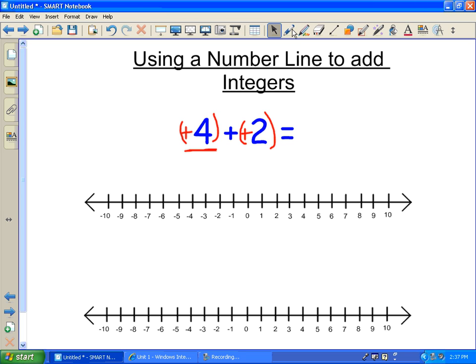So the first thing I'm going to do is plot my point positive 4. So I'll do that in green. So positive 4, well here's 0, the middle. Positive 1, positive 2, positive 3, positive 4 is right here.